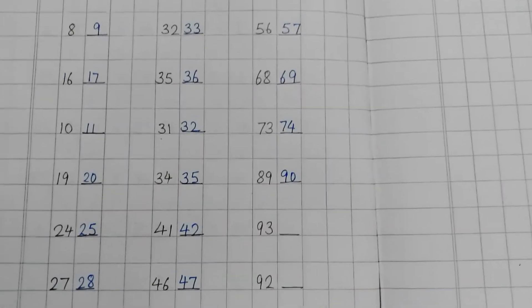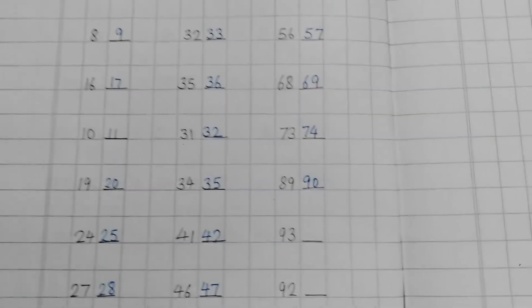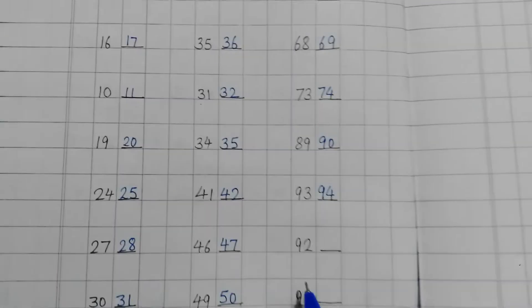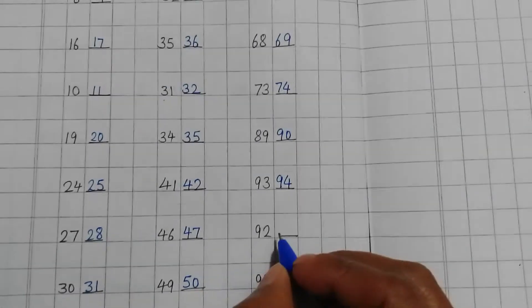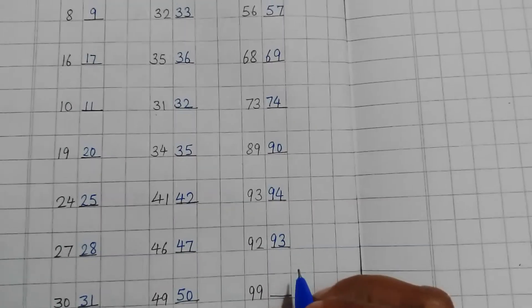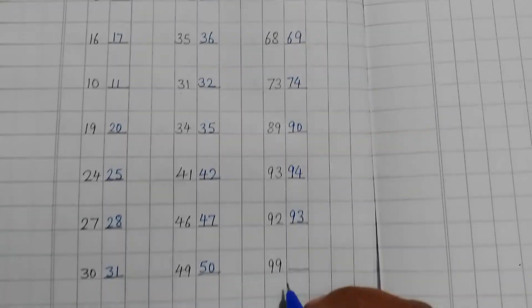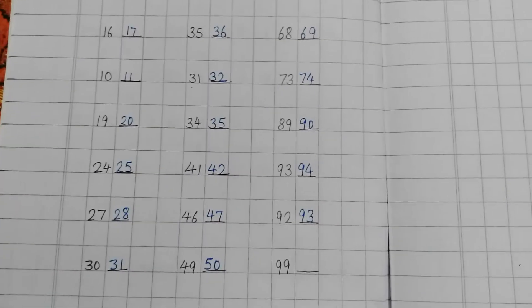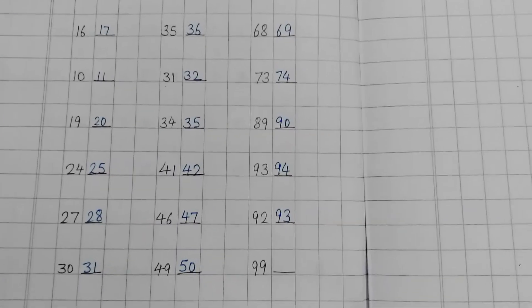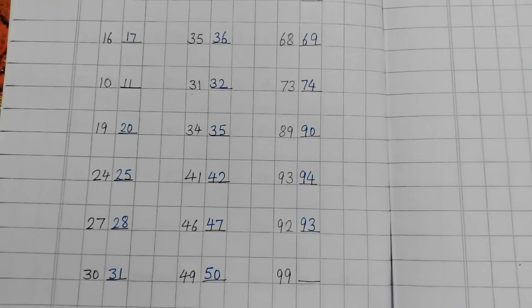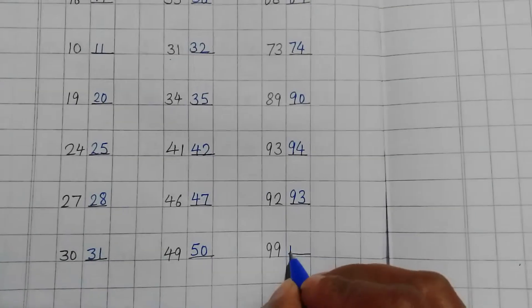Next number is 93. After 93, 94. 92, 93. After 92, 93 comes. Then next number is 99. So after 99, tell me children. 99, I hope you know it very well. 99, 100. Okay.